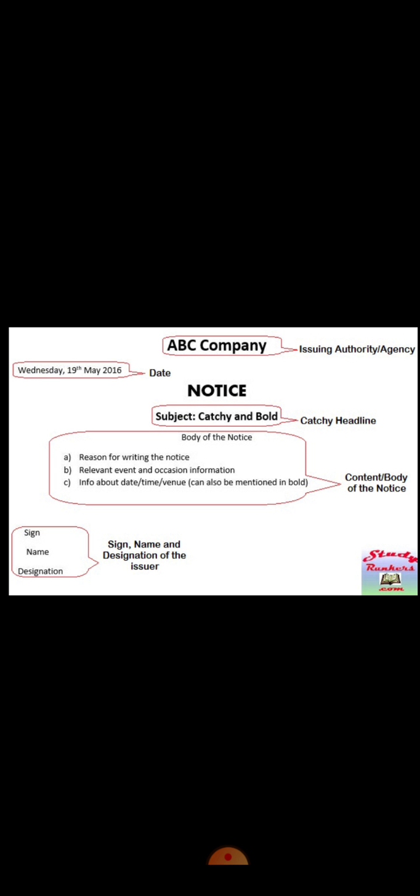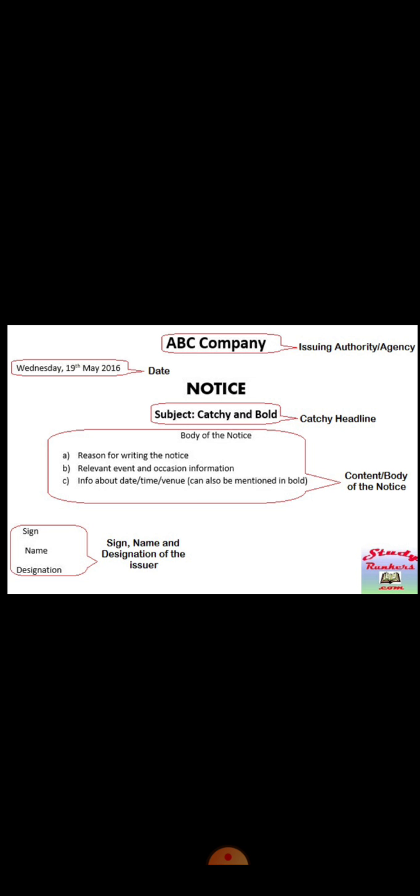At the last line of the body, after giving all the information, you write: 'For further information, contact the undersigned.' Under the signed section, the sequence is: first your signature, then your name, then your designation. If the name is already given in the question, copy the same name. If designation is given, write the same; if not, you can write your own designation like 'Activity In-Charge' or 'Class Monitor.' This sequence — signature, name, designation — should not change. Don't forget to close the notice box at the end.